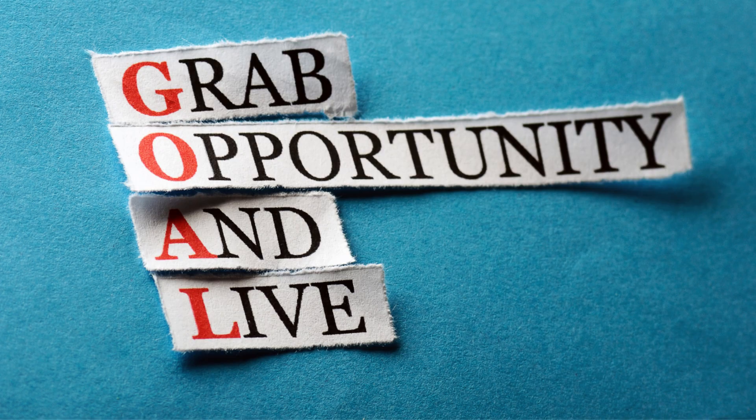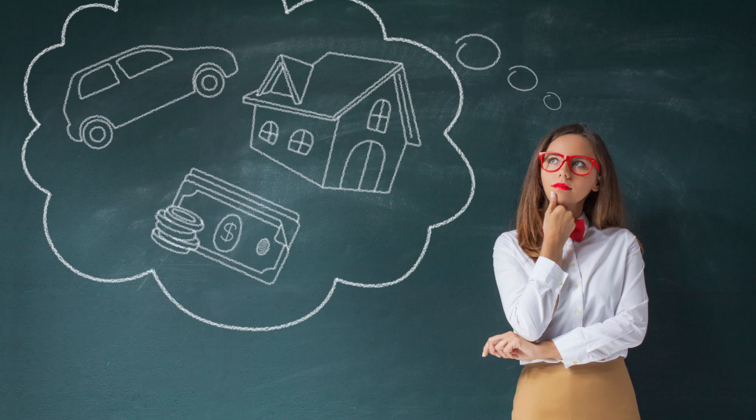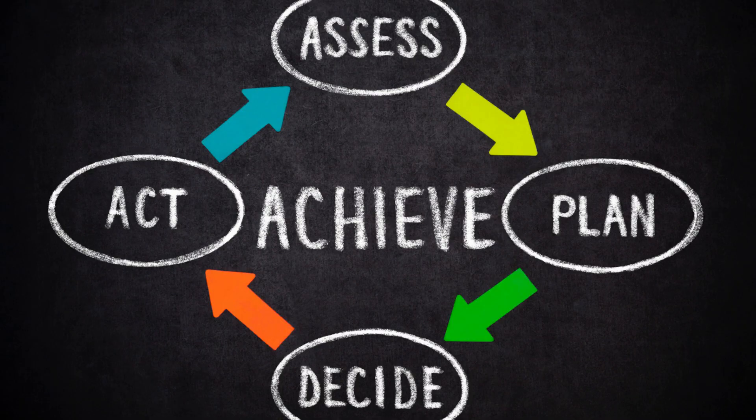The first step is to identify your overarching big picture goal. In other words, what do you want a year from now, a couple of years from now? You have to have a really clear sense of what it is that you are ultimately going after so that you can work backwards from that point to figure out what you should be working on now.